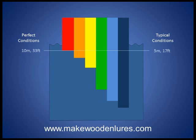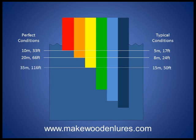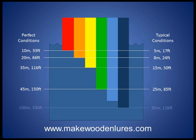Under perfect conditions — oceanic, tropical, sun high overhead, water surface calm and flat — you get maximum light penetration. Under those conditions, red wavelengths penetrate down to around 10 metres or 33 feet. But under typical conditions, like a freshwater lake, reds penetrate to much less — around 5 metres in a clear water lake. Oranges get down to around 8 metres or 24 feet, yellows to around 15 metres or 50 feet, greens to around 25 metres or 80 feet, and the short wavelength blues down to around 35 metres or 116 feet in a really clear freshwater lake.